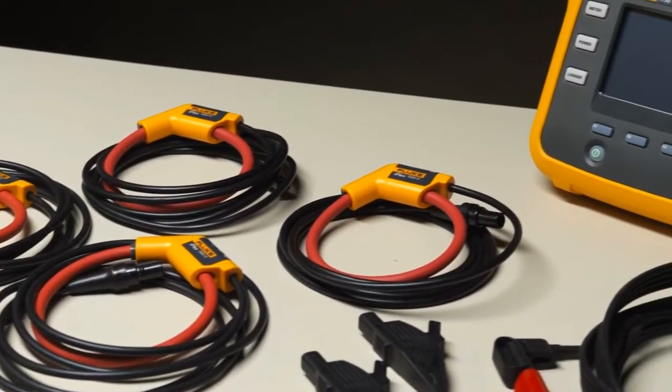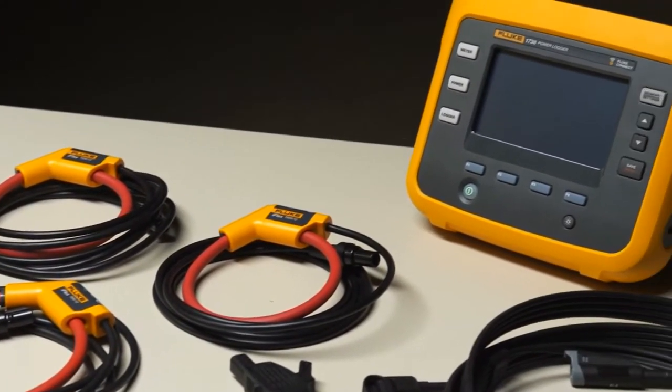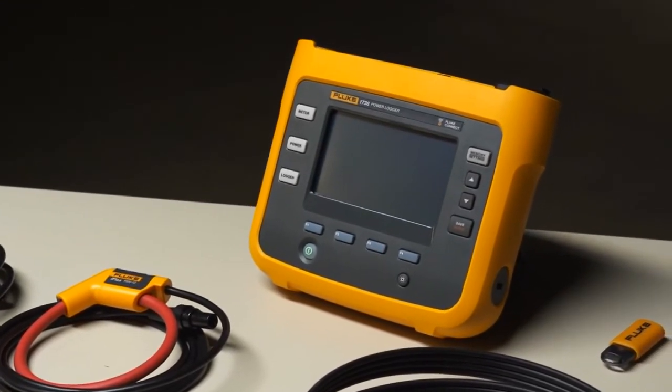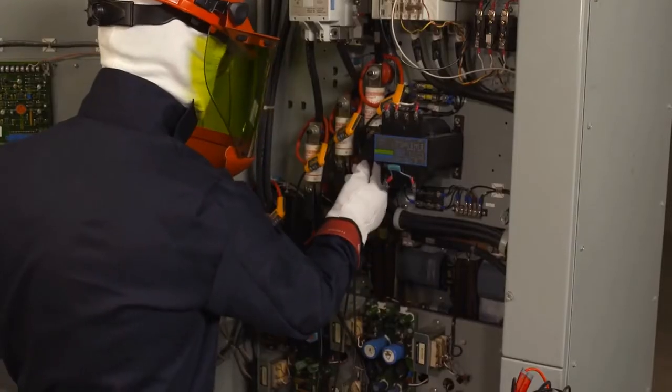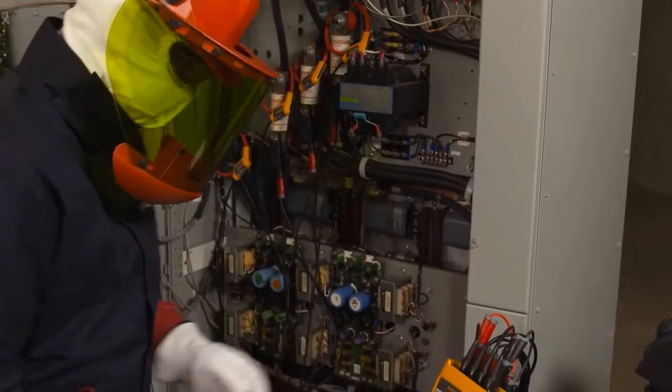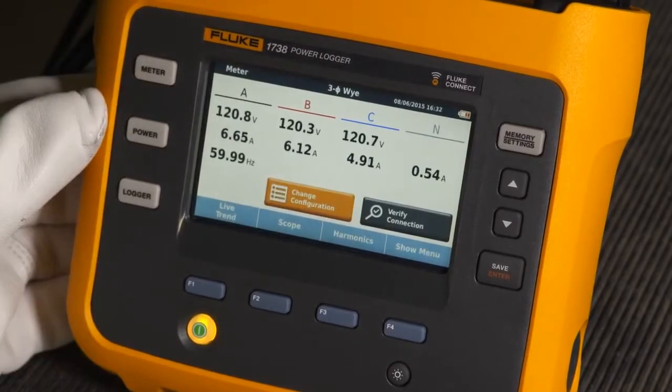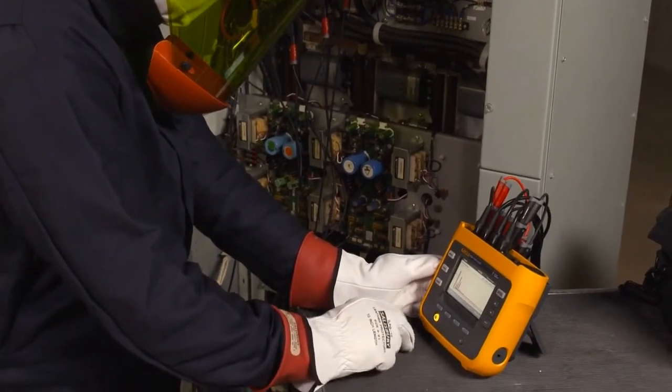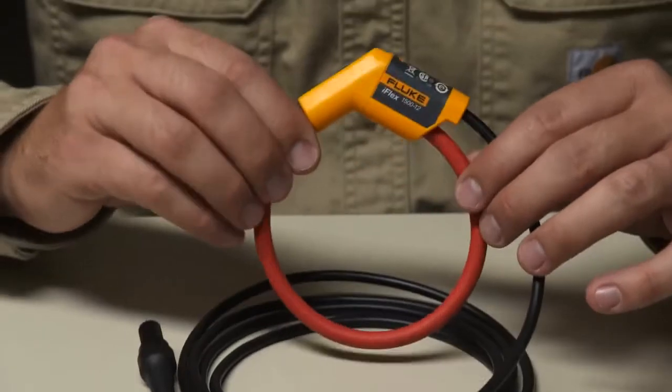The Fluke 1736 and 1738 power loggers are based on the same award-winning platform as the Fluke 1730 energy logger. In addition to helping you quantify and qualify energy usage, the Fluke 1736 and 1738 can automatically capture and log over 500 power quality parameters.